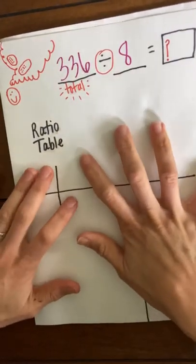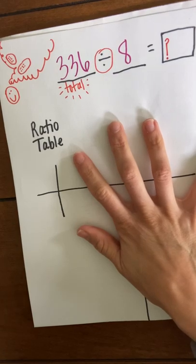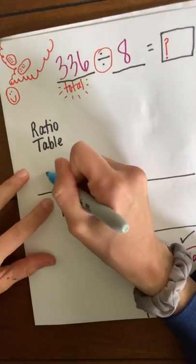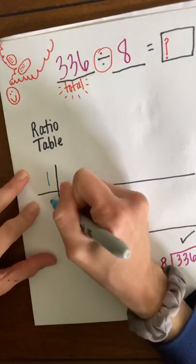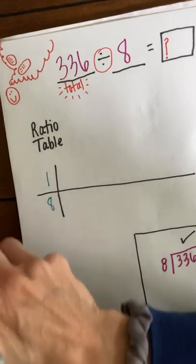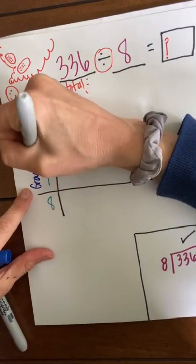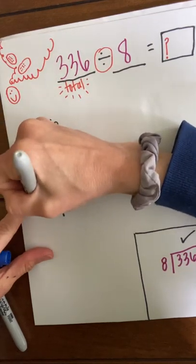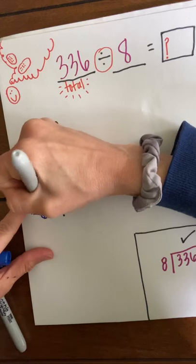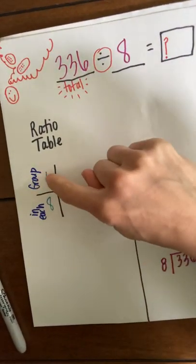So let's do that using a ratio table. For the ratio table, I know that one group has eight in it. And I like to label, I'm gonna take the time to make sure I label. This is one group and eight in each. So one group has eight.